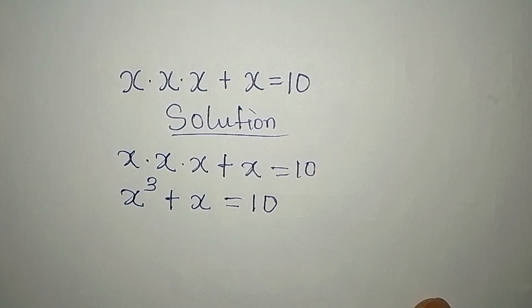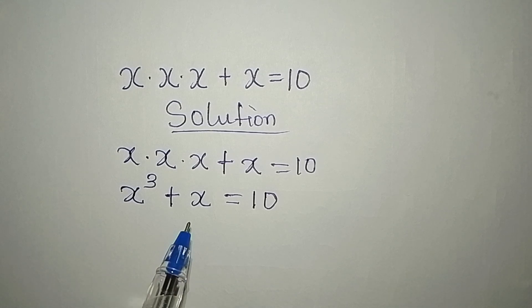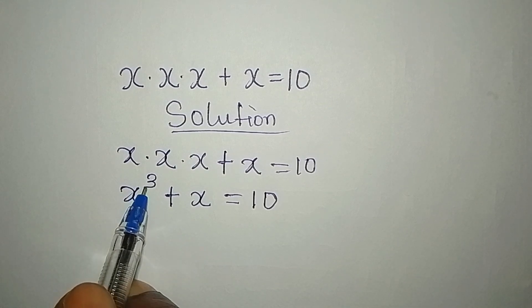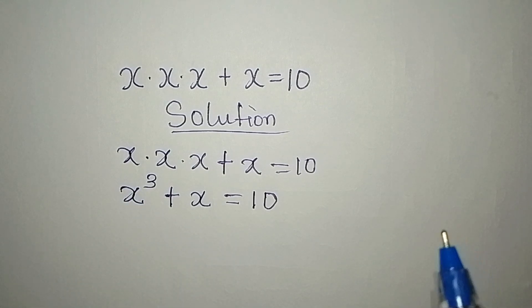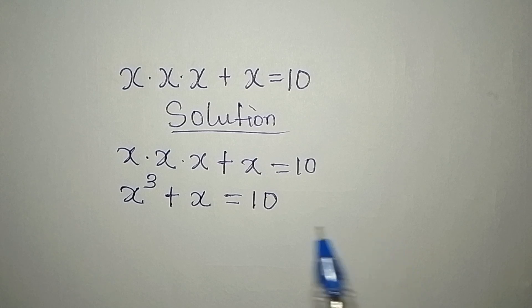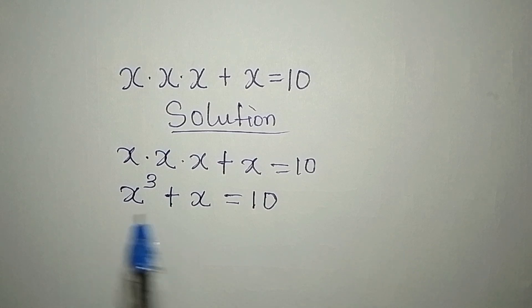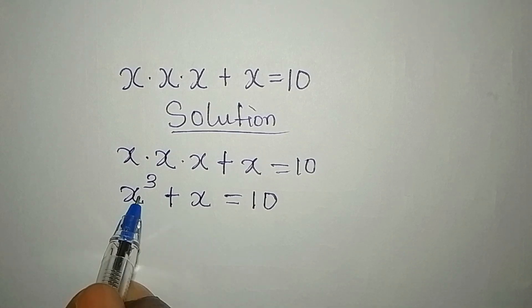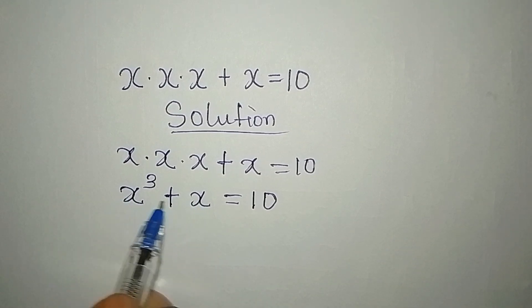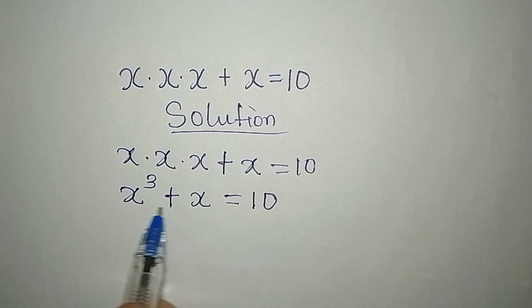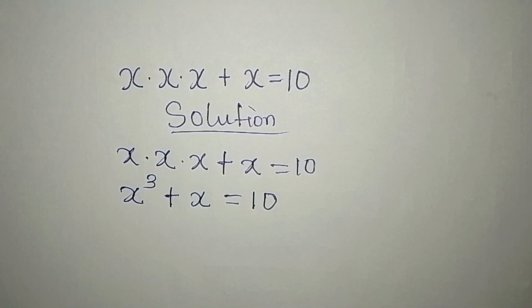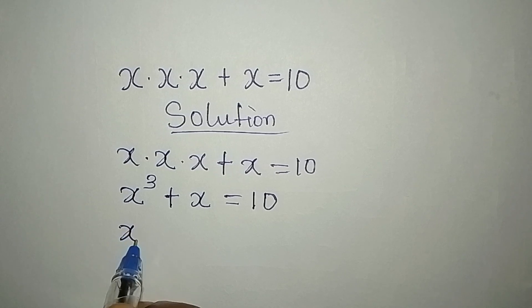Now some persons will be tempted to say x to the power of 3 plus x is x to the power of 4, but that is not correct — you cannot add these two together. The only thing you can do is factorize, but we don't need that at the moment.